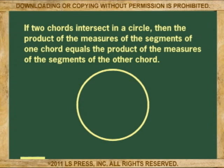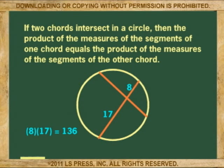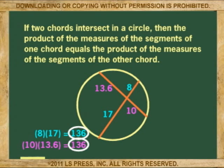If two chords intersect in a circle, then the product of the measures of the segments of one chord equals the product of the measures of the segments of the other chord.